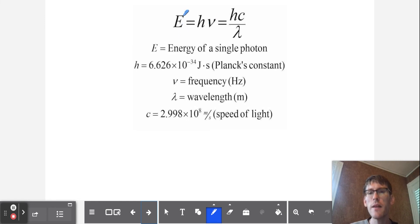Here's our equation. The energy of light is equal to h nu, which is Planck's constant times the frequency, and that is also equal to Planck's constant times the speed of light divided by the wavelength, hc over lambda.